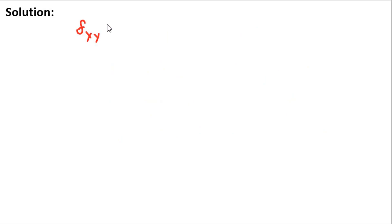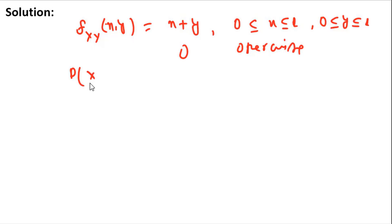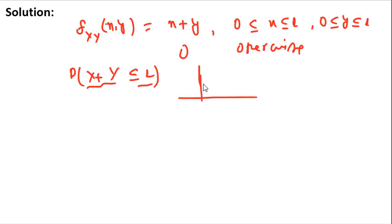Coming to the solution: f(x,y) = x + y for x in [0,1] and y in [0,1], and 0 otherwise. We need to find P(x + y ≤ 1). To do so, let us plot the line x + y = 1, which passes through the points (1, 0) and (0, 1) on the x-y plane.